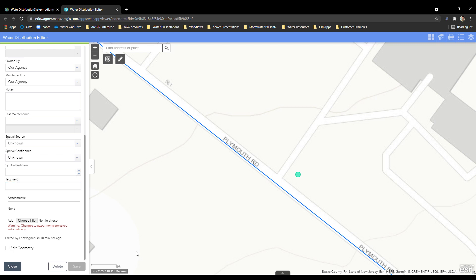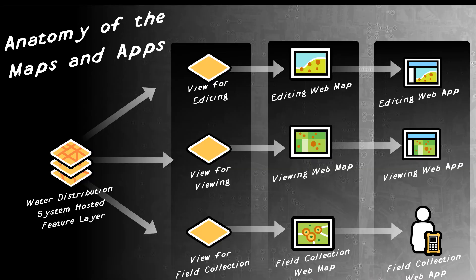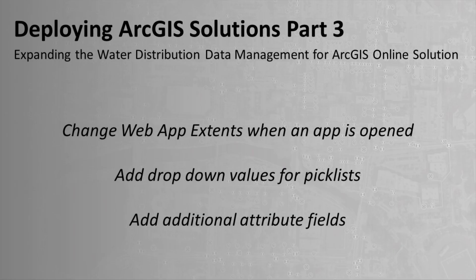So what a lot of this process comes back to — whether you want to update your domain values, those drop-down lists, or change the fields that are accessible to you — it's really just a matter of going back to this main hosted feature layer, adding your fields or drop-down values, and then activating them. That's really all there is to it in order to expand the solution to incorporate any additional attributes or attribute values you'd like to collect in the field or at the office. We covered quite a bit in this video: how to update the extent of your maps, how to add additional drop-down values, and how to add in additional attribute fields. That draws this three-part series to a conclusion. Thanks for watching.